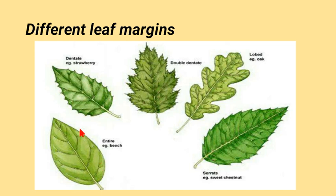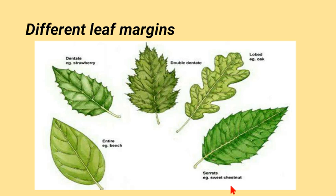For examples: beech tree has entire leaf margins, strawberry leaves are dentate, some leaves show double dentation, oak leaves have lobes, and sweet chestnut and roses have serrate leaves with serration on the margins.